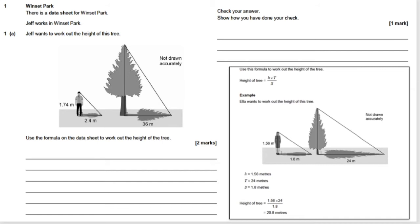So the H would be Jeff's height. This would be the height here. And the T would be the shadow of the tree. So this one would be the T. And the S would be the shadow of Jeff.